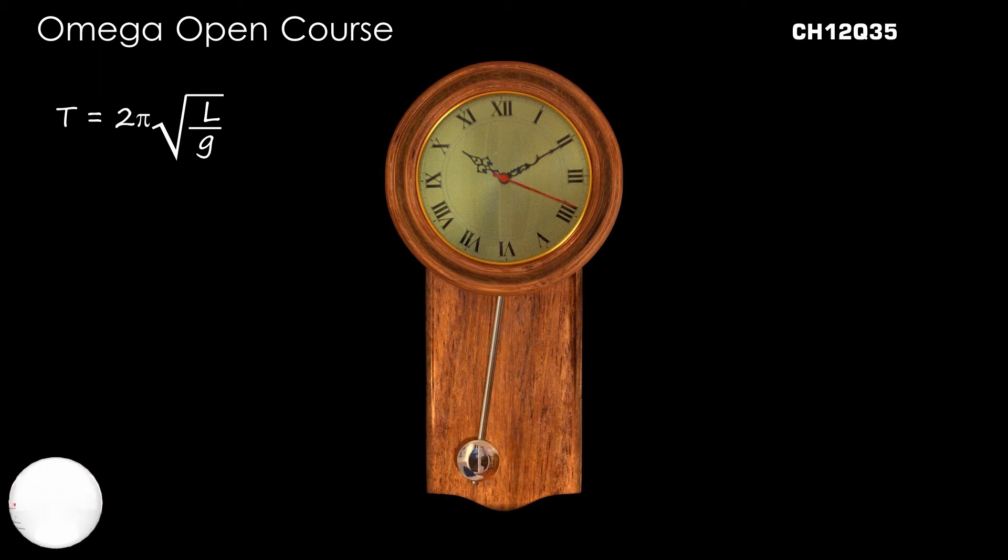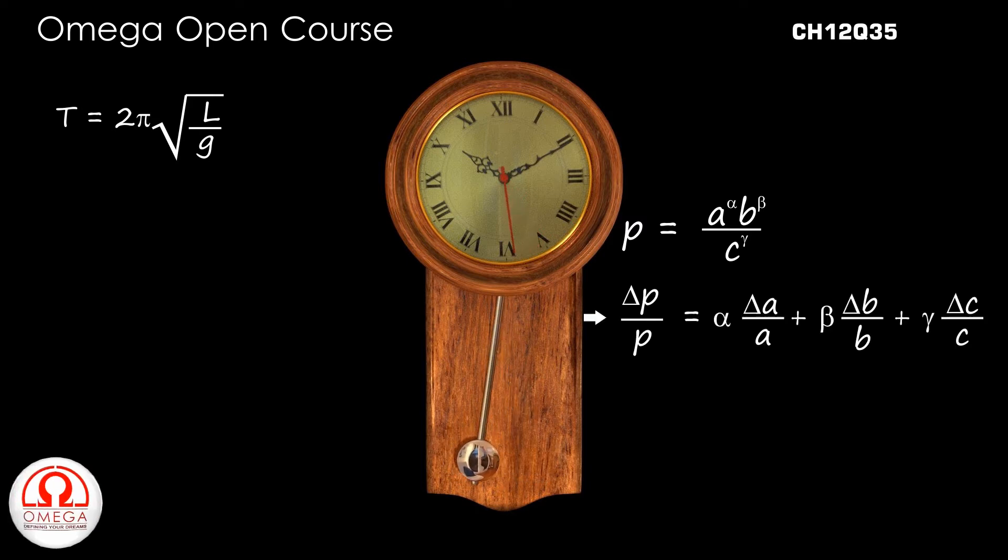From error analysis, we know that if any variable p depends on three quantities a, b, and c as p = a^α × b^β / c^γ, then Δp/p = α(Δa/a) + β(Δb/b) + γ(Δc/c).